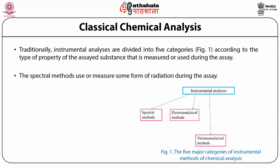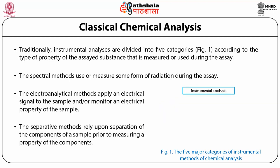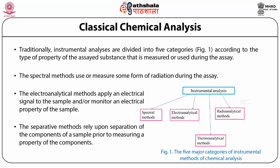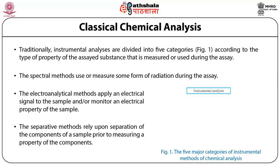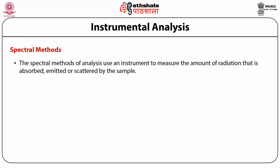The spectral method uses or measures some form of radiation during the assay. The electroanalytical method applies an electrical signal to the sample and monitors an electrical property of the sample. The separative method relies upon separation of the components of a sample prior to measuring a property of the component. The major separating methods are chromatography, extraction methods, and ion exchange methods.